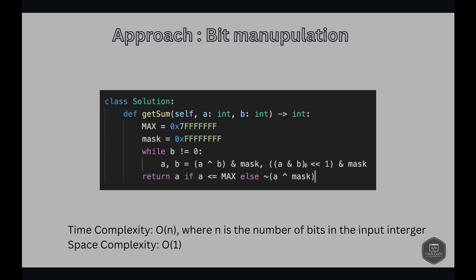Updating B with the carry: B = ((A AND B) left shift 1) AND mask. The AND operation finds where both A and B have ones, which would generate a carry in normal addition.